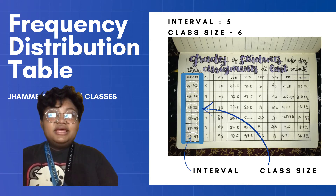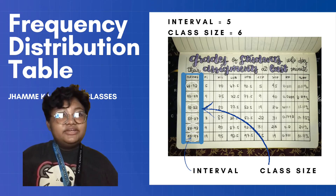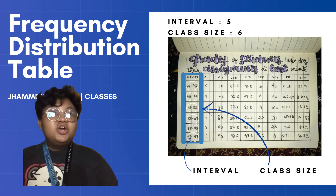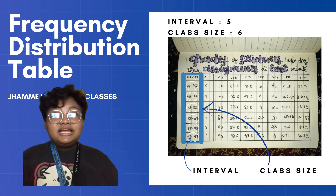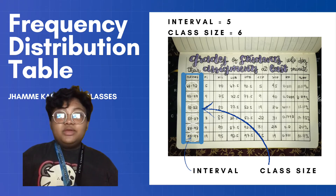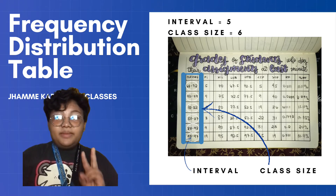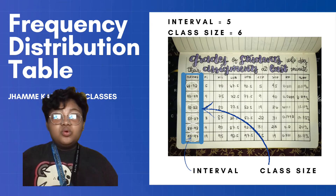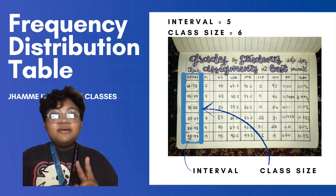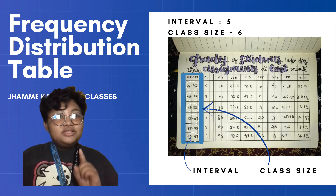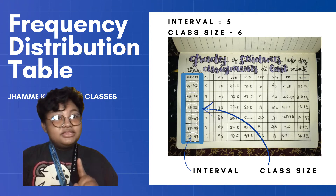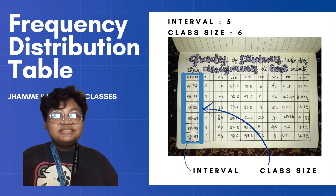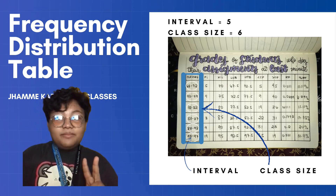You will do the same until you get the number of classes equal to the class size. In our data, the classes are: 68–72, 73–77, 78–82, 83–87, 88–92, and lastly 93–97.